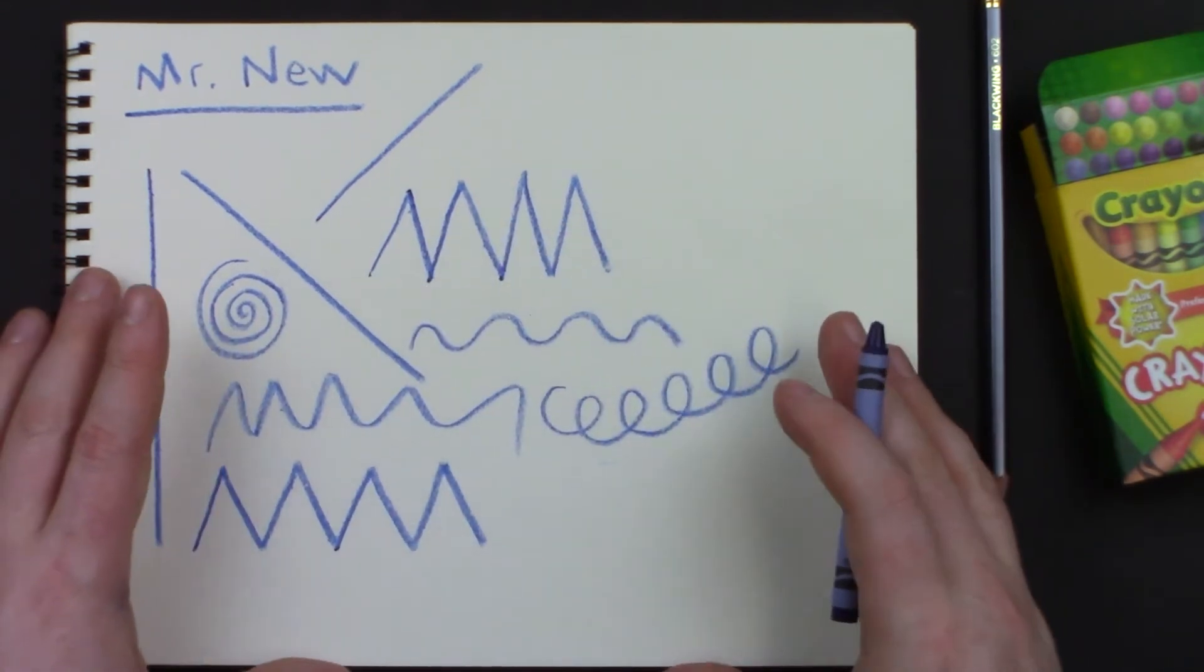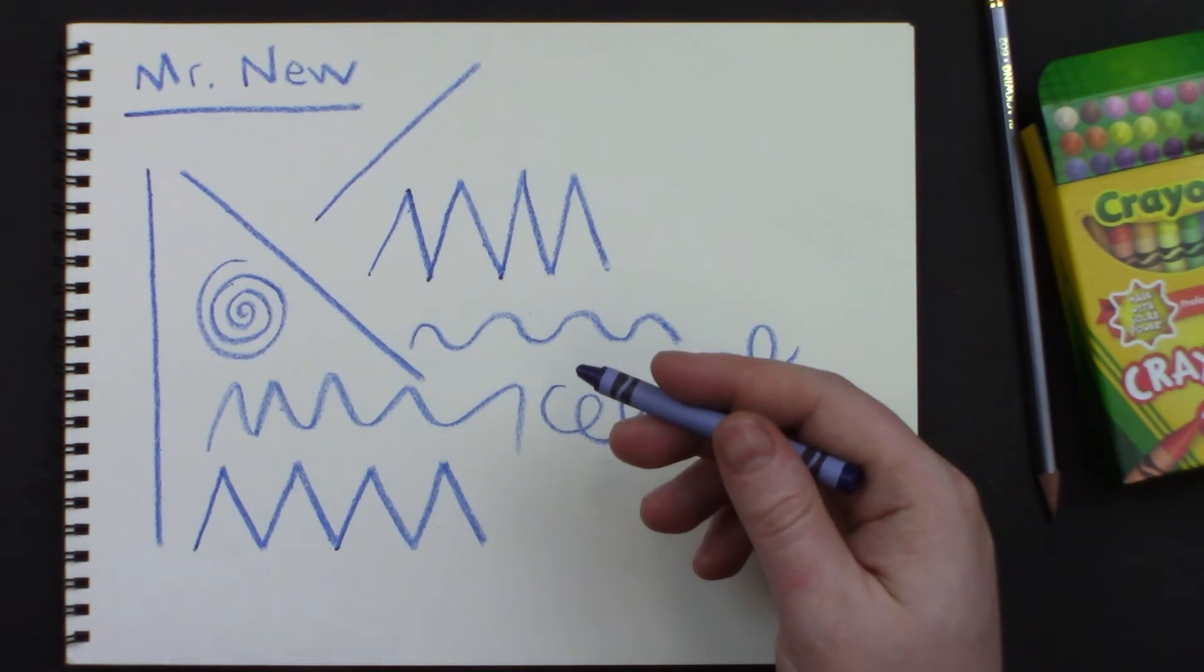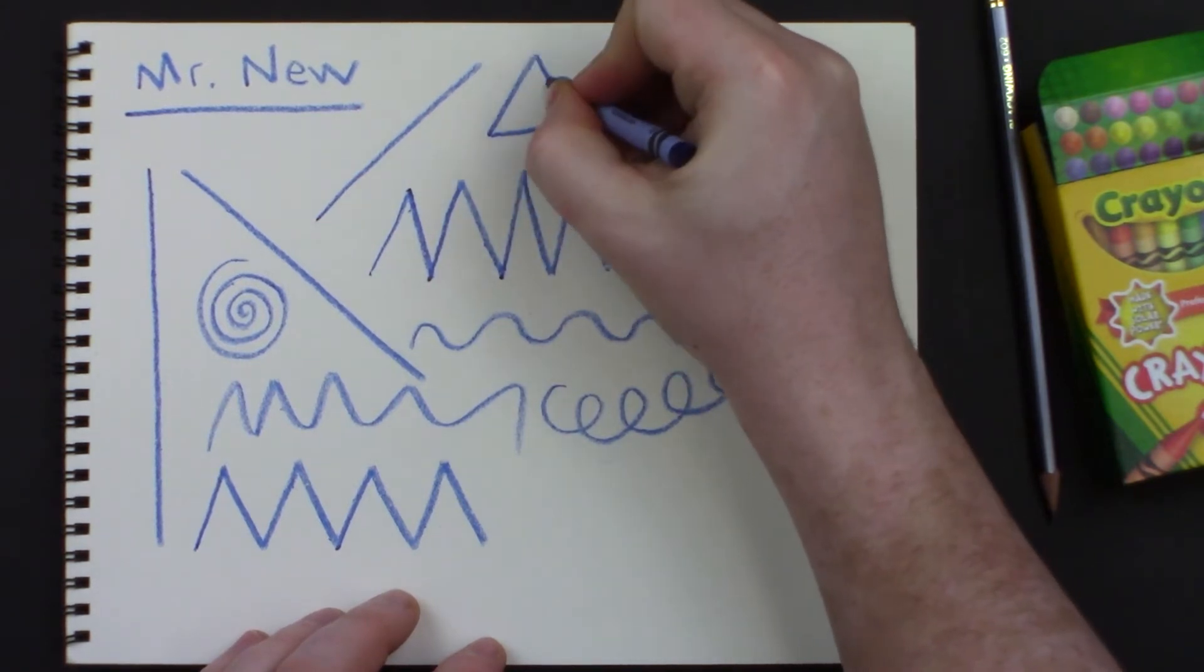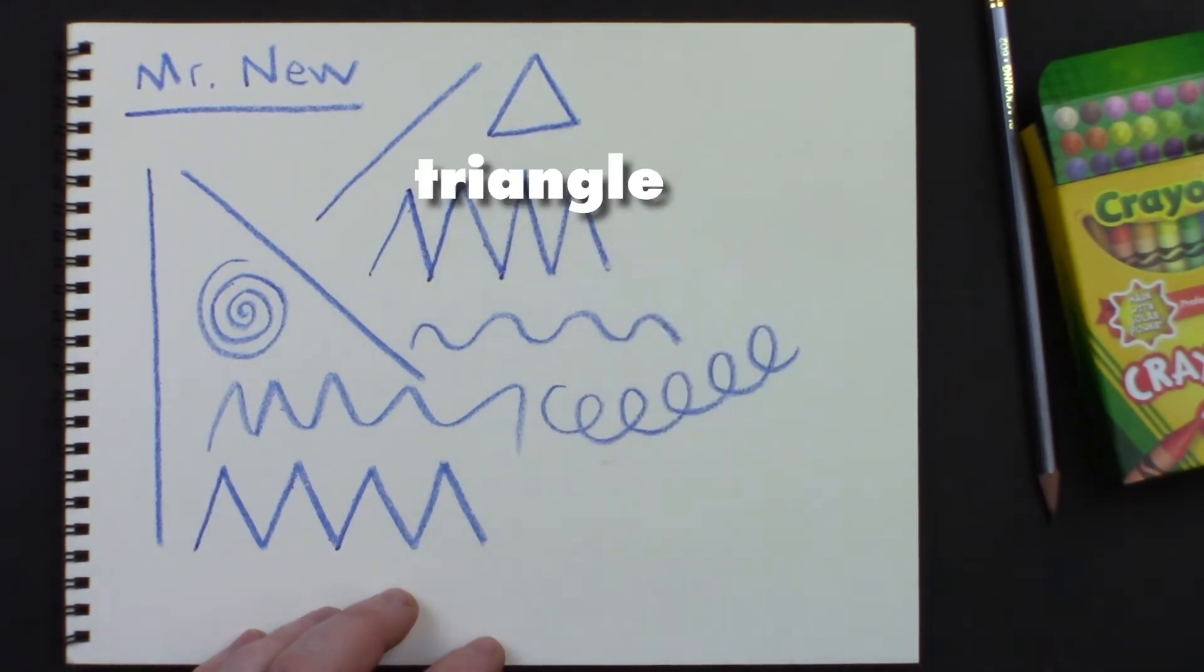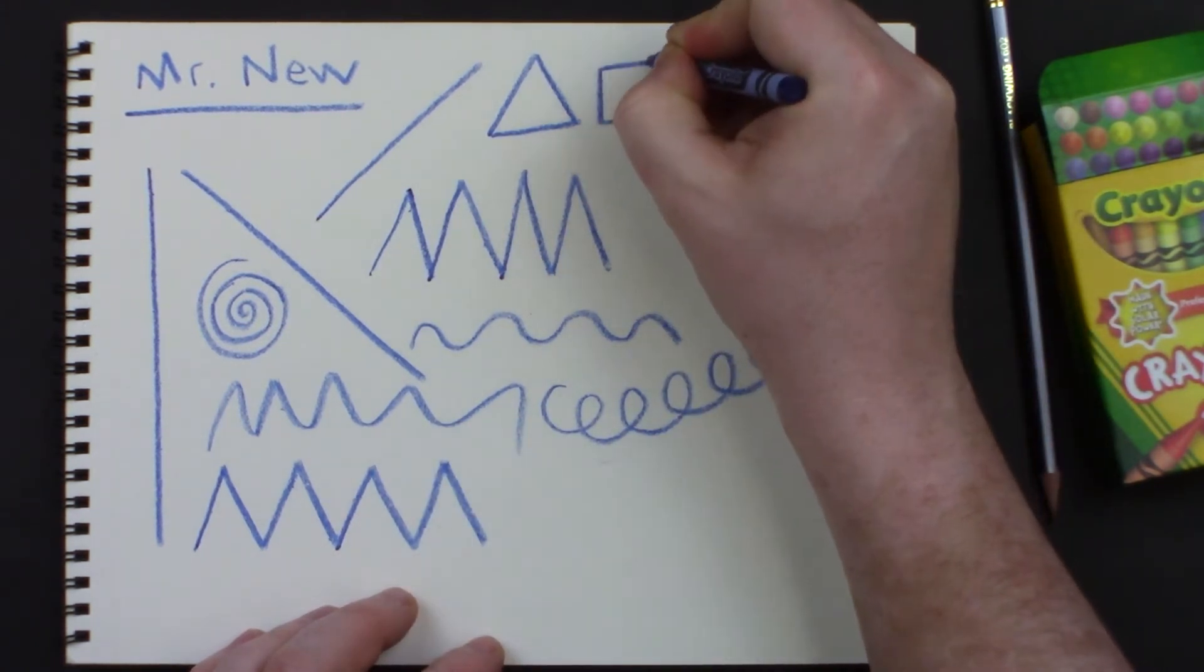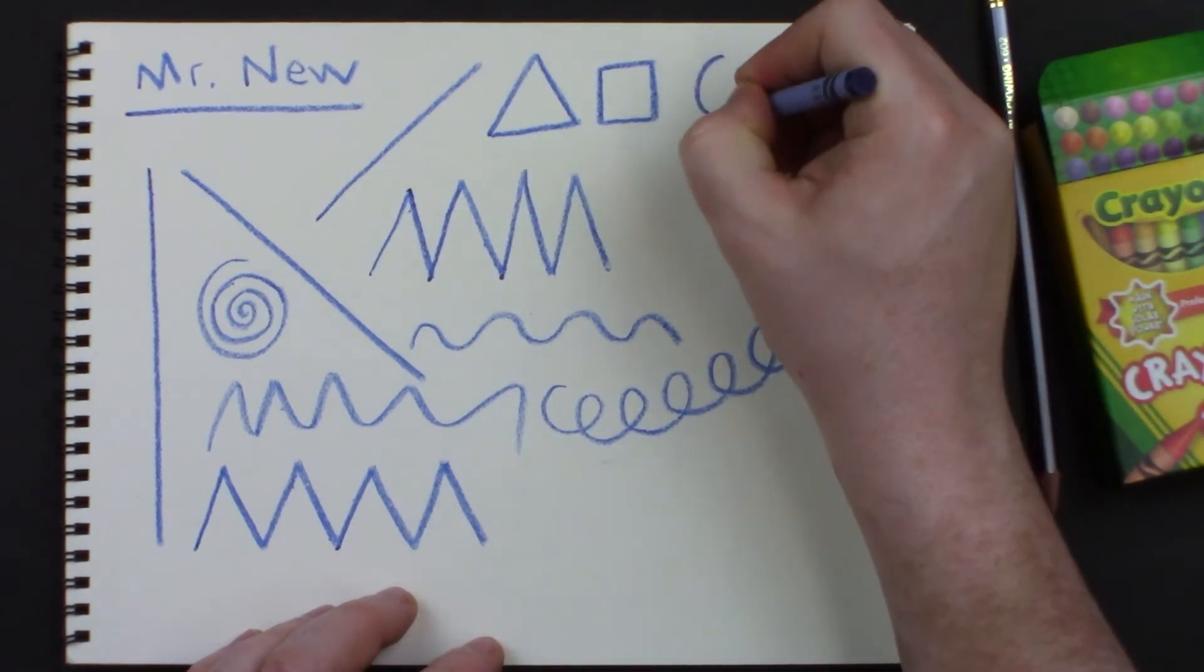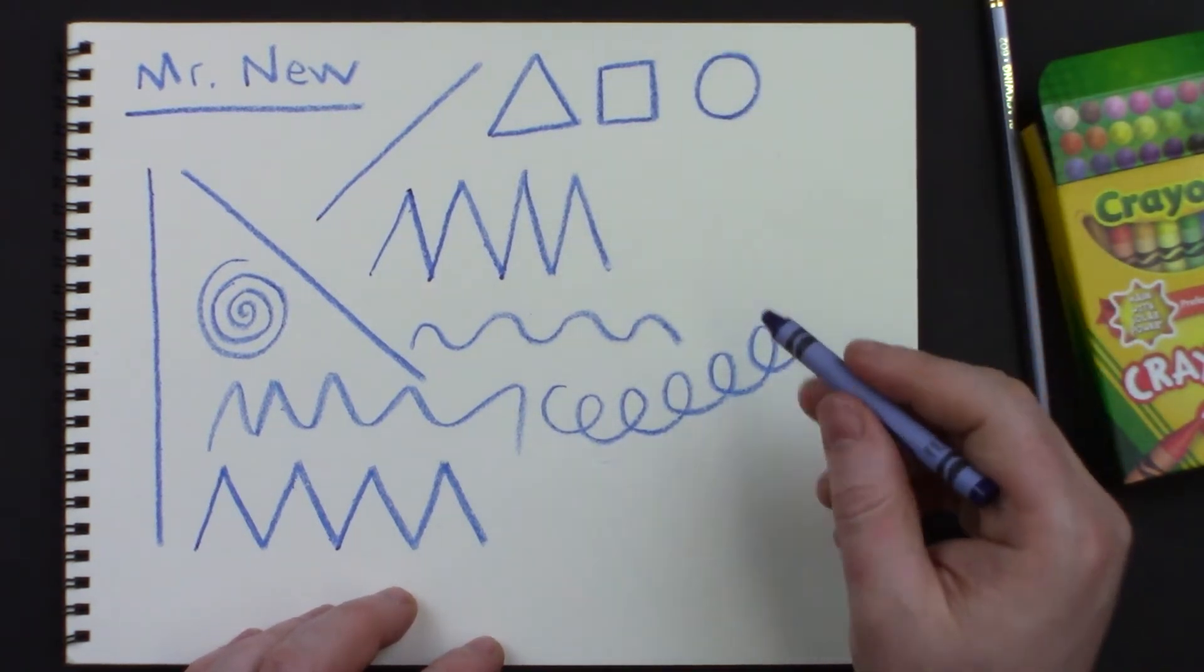Which leads us into a discussion of shapes. We've talked about different ways of making lines. Let's talk about some different ways to make shapes. What do you call a shape that has one, two, three sides? That shape is called a triangle. What do you call a shape that has one, two, three, four sides? That shape is called a square. And what do you call a shape that has just one side? One side that curves around like that is called a circle.